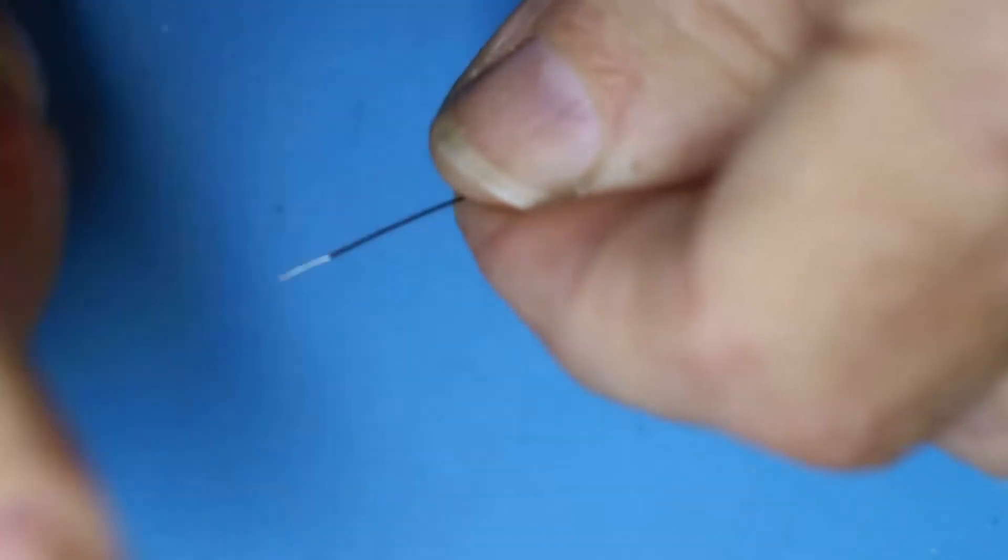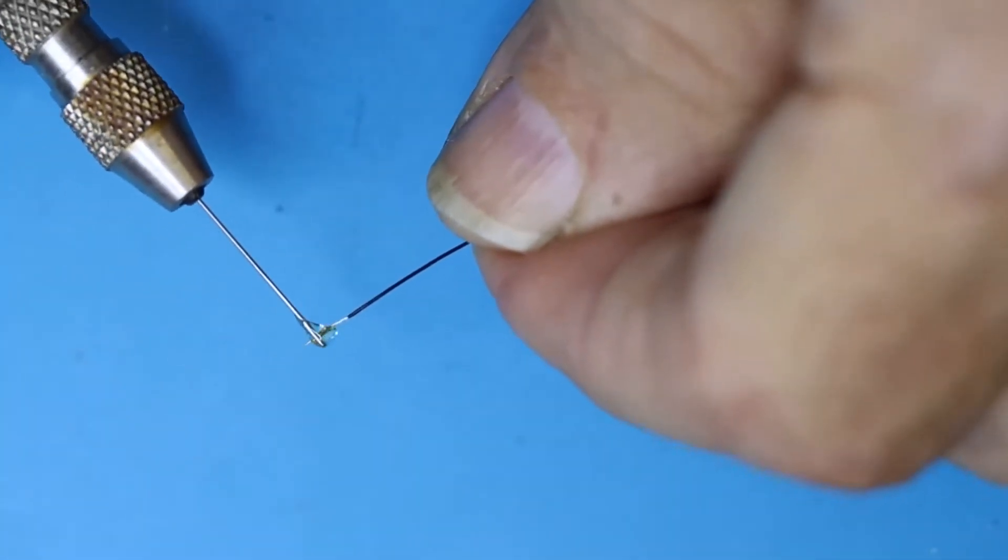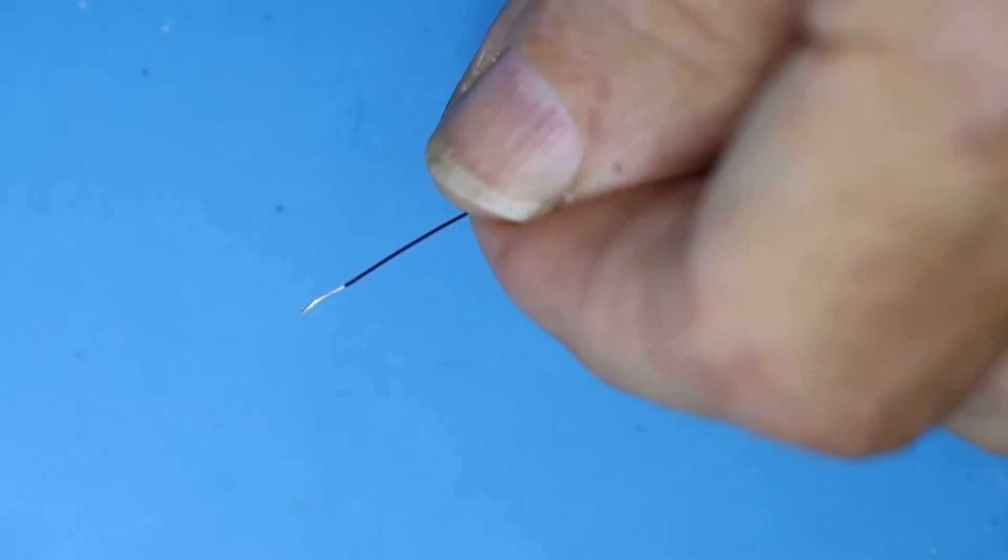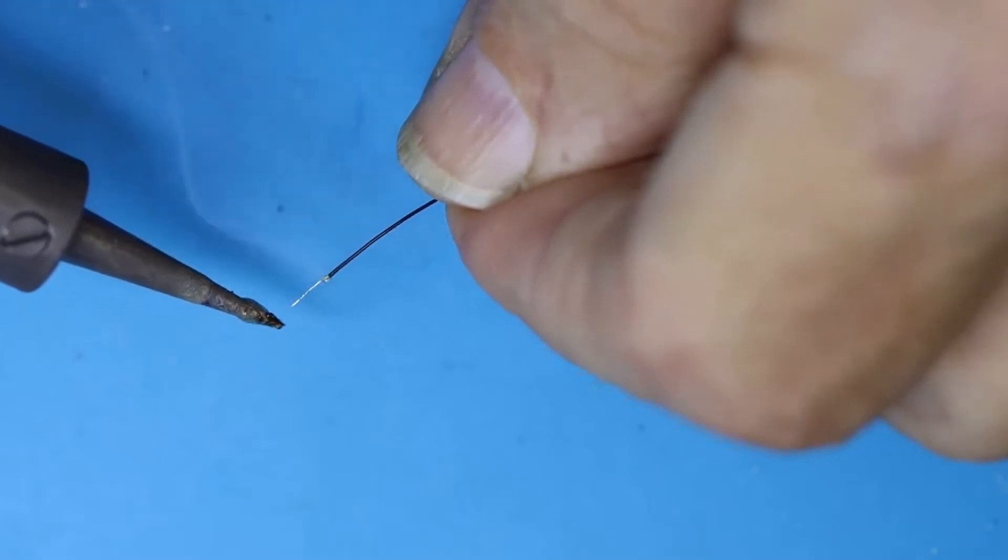Then just twist the strands together. Add a little bit of chip quick flux or flux, and tin it with solder.